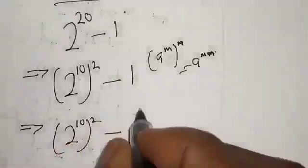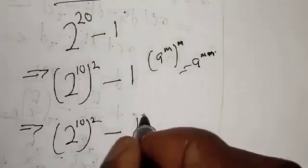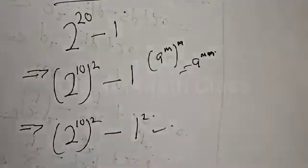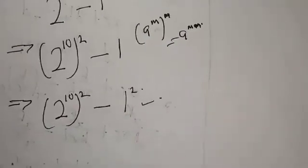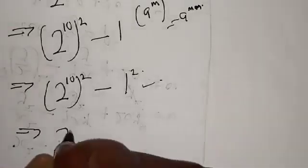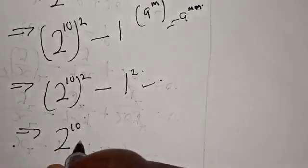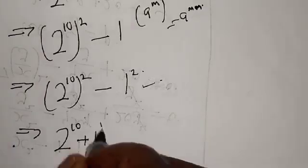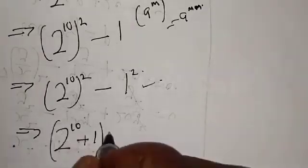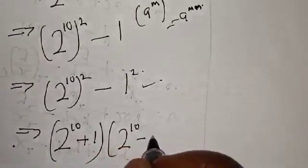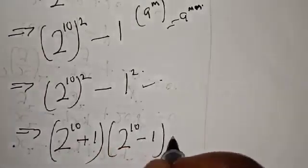This squared minus one is a difference of two squares, so it can be expressed as: 2 raised to power 10 plus one, multiplied by 2 raised to power 10 minus one.